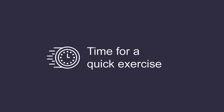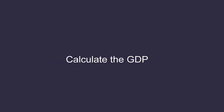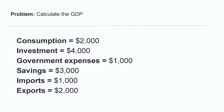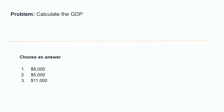Time for a quick exercise: calculate the GDP. Here is the economy. Consumption is equal to $2,000. Investment is $4,000. Government spending is $1,000. Savings are $3,000. Imports are $1,000. And exports are $2,000. What is the GDP? $8,000? $5,000? Or $11,000?